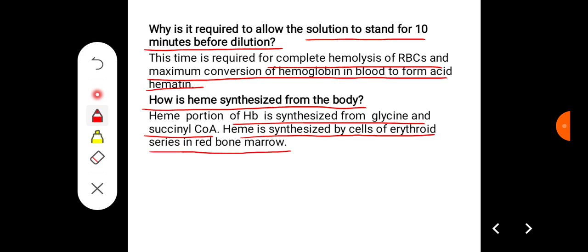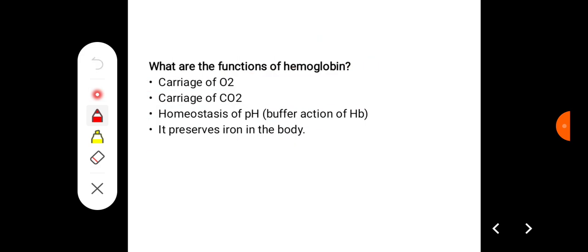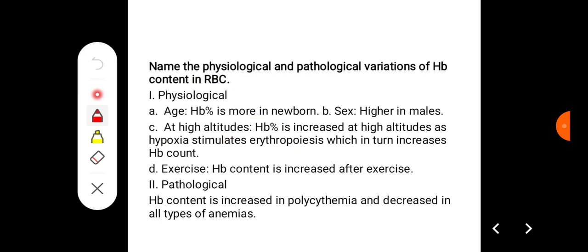What are the functions of hemoglobin? It carries oxygen, carries carbon dioxide, is important for homeostasis for regulation of pH, and preserves iron in the body. Name the physiological and pathological variations in hemoglobin content in RBC. Some of the physiological causes are age: hemoglobin is more in newborn and it is higher in males.